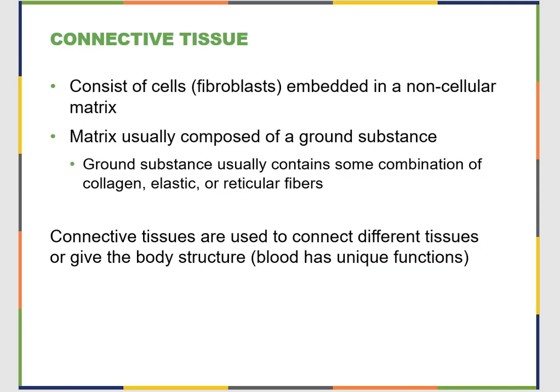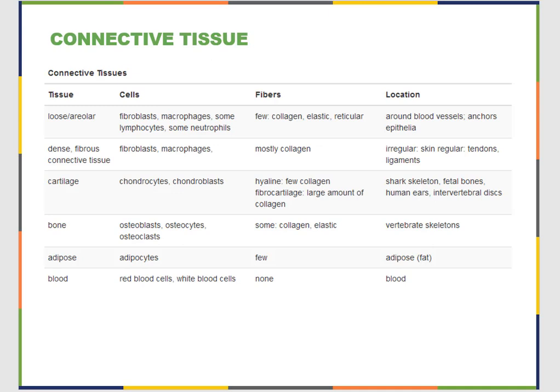Connective tissues consist of cells embedded in a noncellular matrix — the extracellular matrix. The matrix is usually composed of a ground substance: a mix of collagen fibers, elastin fibers, and reticular fibers. Connective tissues connect other things to each other or give your body structure. Types include dense fibrous connective tissue, loose areolar connective tissue around blood vessels, and adipose tissue — fat is actually considered a connective tissue, because technically that's what fat does.